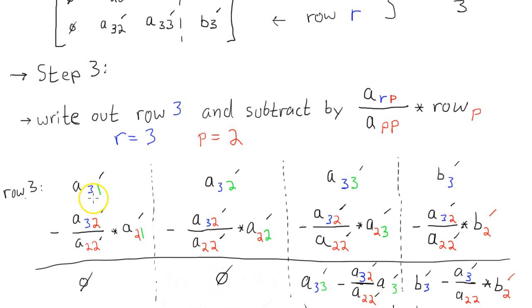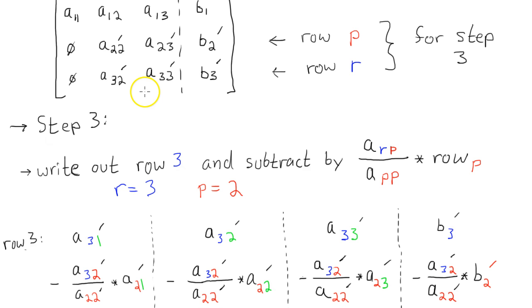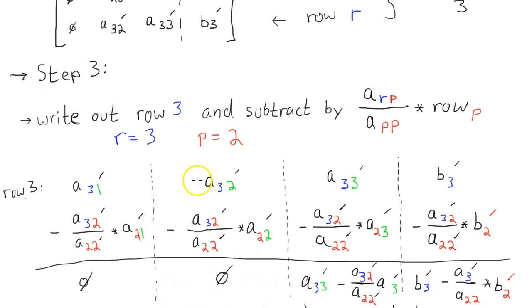So the result is a zero. And then of course, right here, the a 2, 2, a 2 cancel out. And then a 3, 2, a 3, 2 cancel out. And then we get zero. And all of these are the modified numbers.